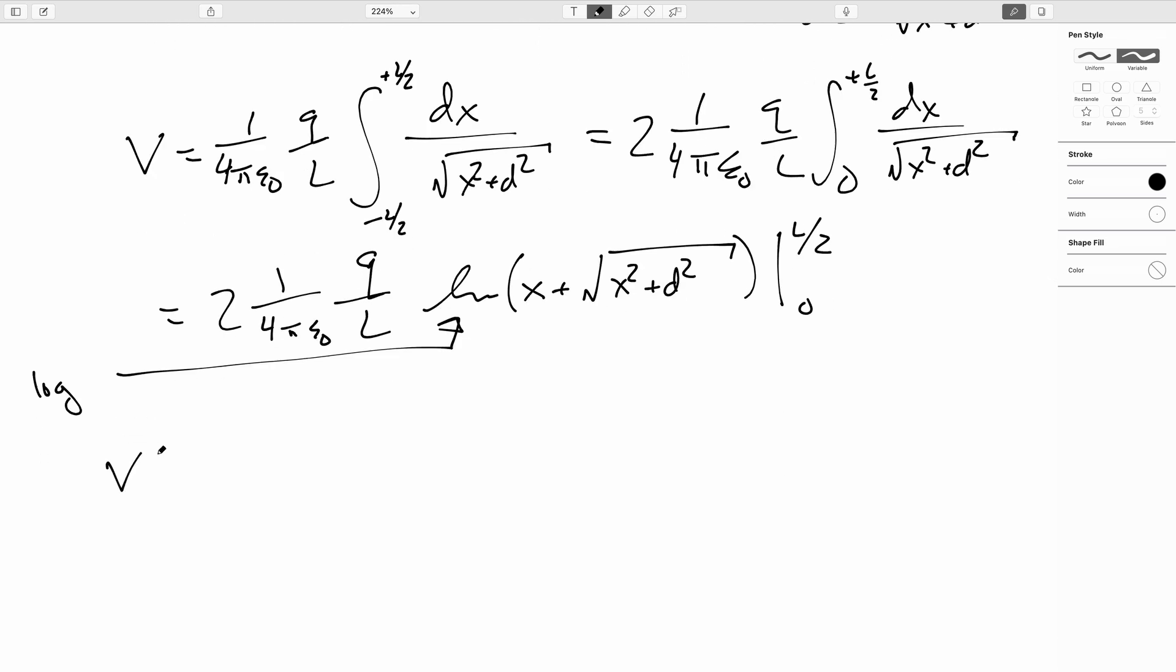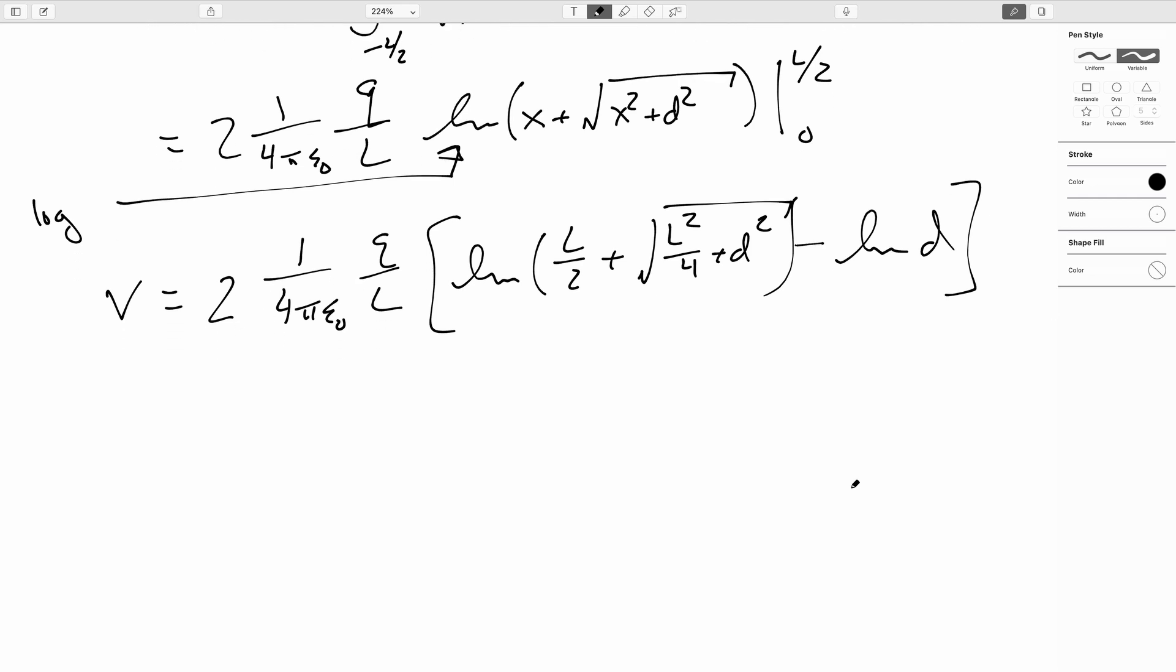So we'll have 2 times 1 over 4 pi epsilon naught Q over L. So this is going to be the natural log of putting in for L over 2 here. This is going to be L over 2 plus the square root of L squared over 4 plus D squared. And then I'm going to subtract the natural log of when I put 0 in for X. So that's just going to be the natural log of the square root of D squared, which is the natural log of D.